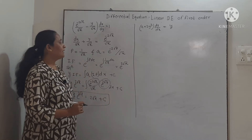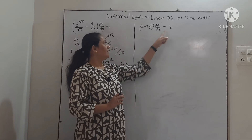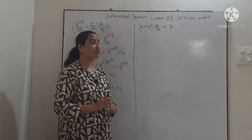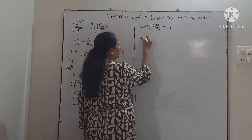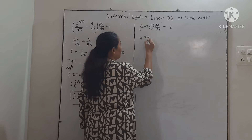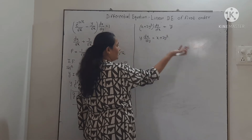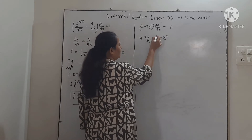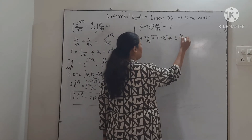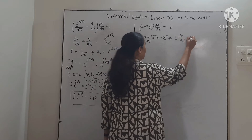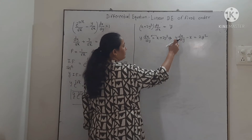We will take one more example. Consider x + 2y³ · dy/dx = y. The highest power of x is 1, so we convert this into linear in x. Transferring dy/dx gives y · dx/dy = x + 2y³. Transferring x to the other side: y · dx/dy − x = 2y³.